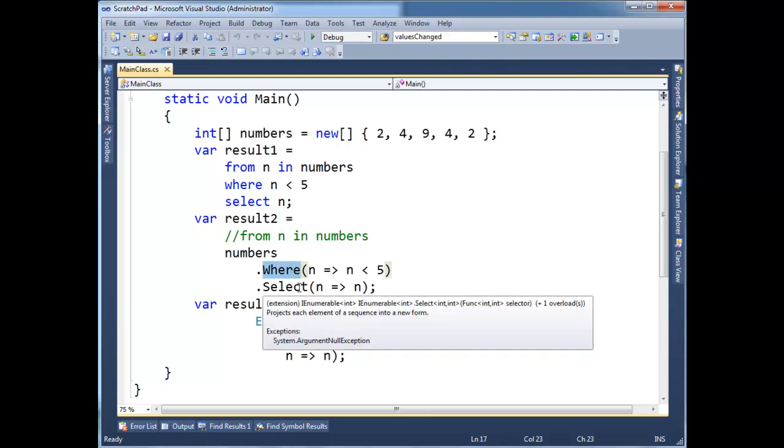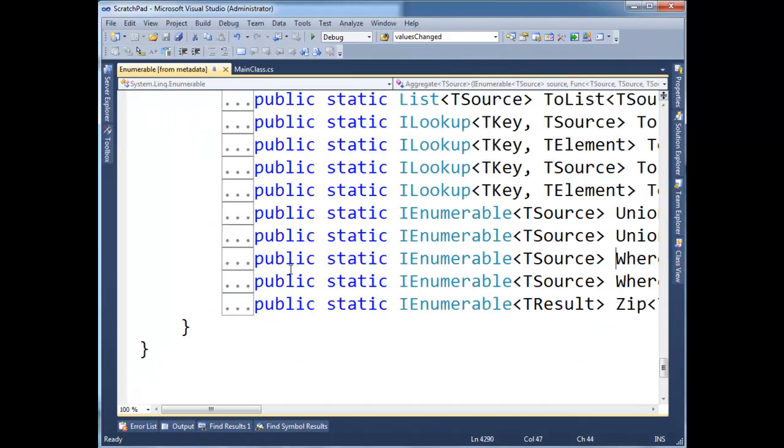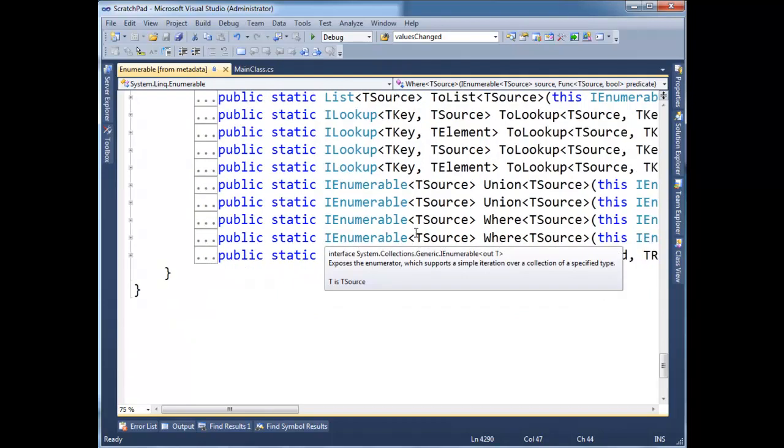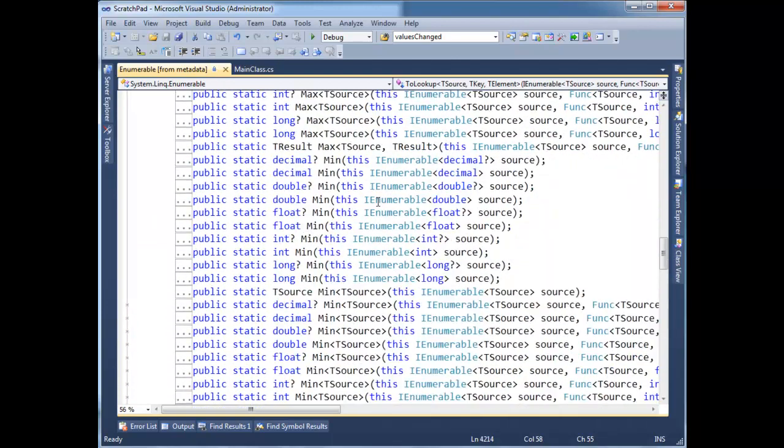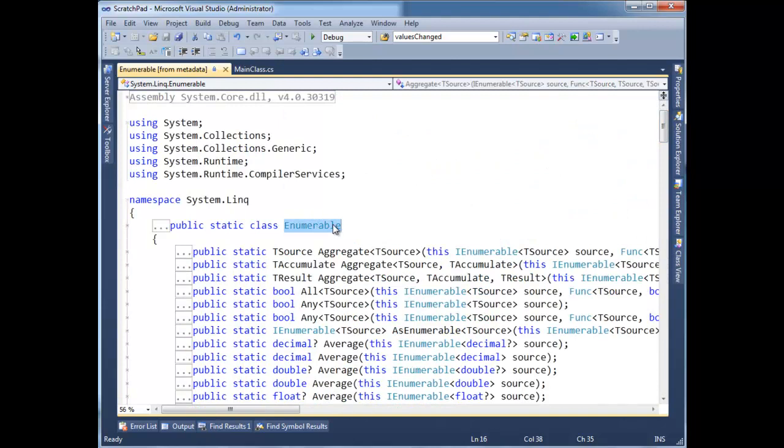Remember this where and this select, these both came from enumerable. When I hit F12 here, we'll go view the metadata, I showed this in the last video, but basically there's all these enumerable methods. There's where, union, to look up, we'll look at all these, scroll through the top again here and we see that it's just in this enumerable class.